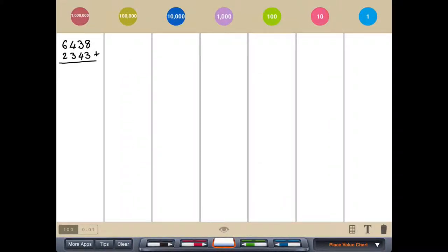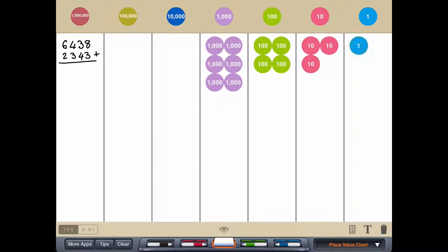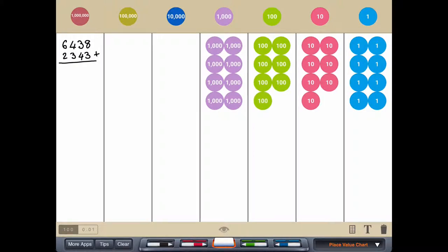Right, so we are working with 6438 and we are adding 2343. So let's first of all get the 6438 and let's now add the 2343. Now what we would do traditionally with this is we would add each column.